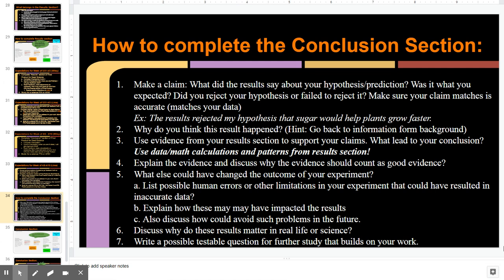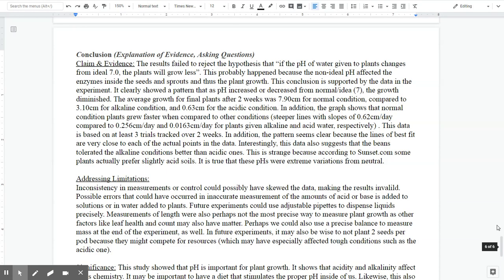Next thing you have to worry about is actually the thing that most matters for your actual cognitive skill score, which is using evidence to defend this claim. So if you go back to the exemplar, I'm going to try to use as much data, as much math, as much patterns as I noticed in my results section as I can. And I do exactly that.